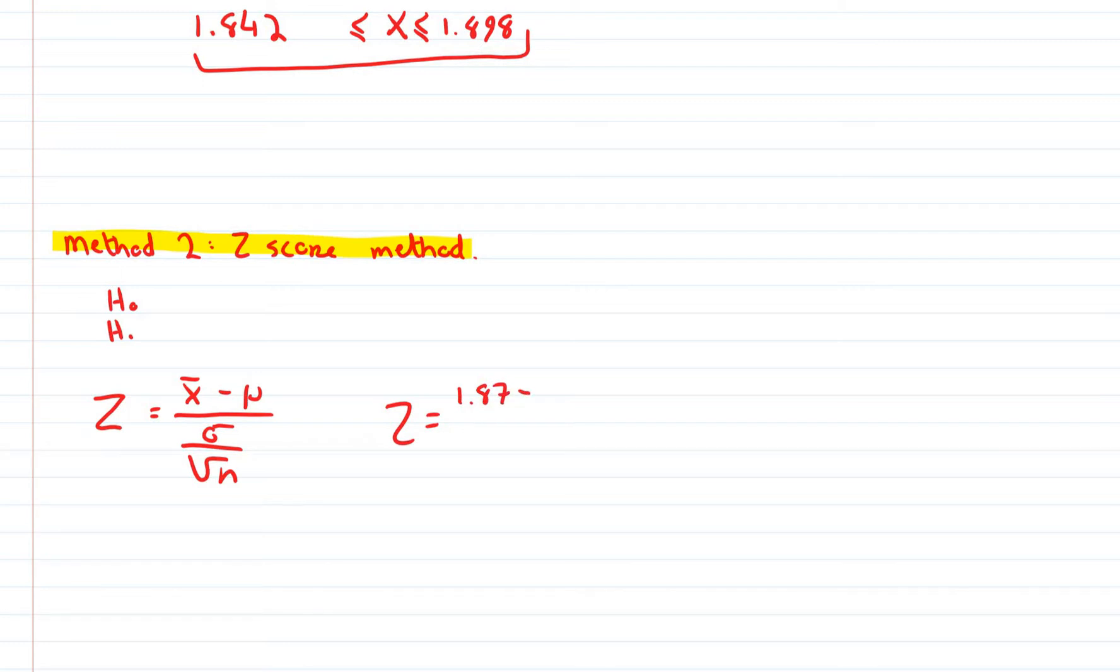The mean of the old tomatoes then, 1.83, all over standard deviation, and that's all over 600.